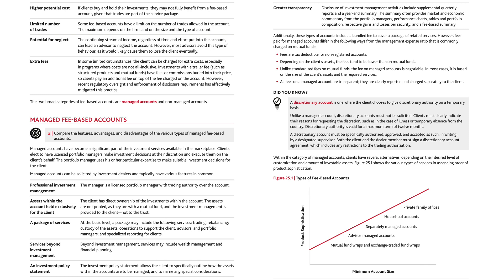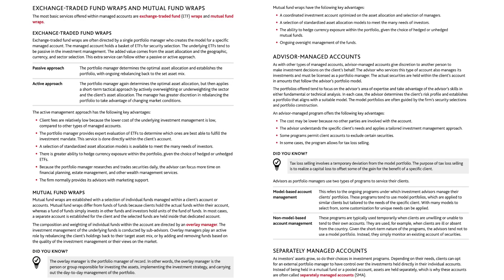Within the category of managed accounts, clients have several alternatives depending on their desired level of customization and amount of investable assets. Figure 25.1 shows the various types of services in ascending order of product sophistication. Starting at the bottom and moving up, we have Mutual Fund Wraps and Exchange Traded Fund Wraps, Advisor Managed Accounts, Separately Managed Accounts, Household Accounts, and Private Family Offices.